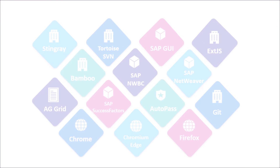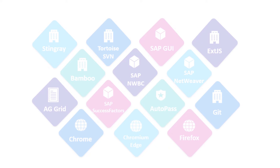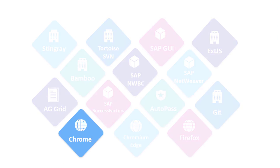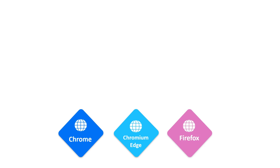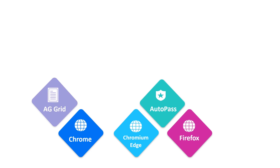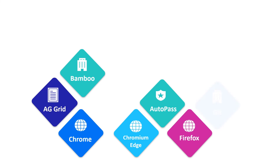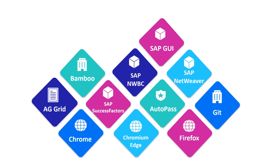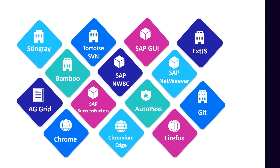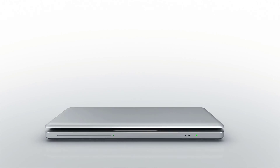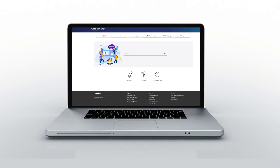As always, this UFT1 release supports new versions of Chrome, Chromium Edge, and Firefox, new AutoPass license server versions, and many new technology versions. For example, AG Grid, Bamboo Servers, Git, SAP, and more. For more new features, check out the Help Center.